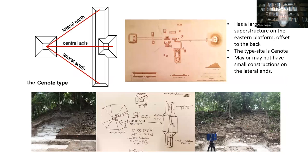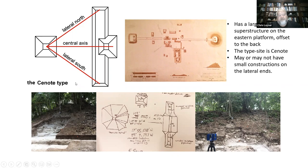The second type is called the Cenote type, categorized by a western pyramid and a north-south running platform, but with a superstructure that sits off the back at an offset. You can see a Cenote type E-group at this site where east is shown here. There's also a Cenote type E-group at the site of Sunun where our team did 3D imaging — the western pyramid here and the eastern platform there.